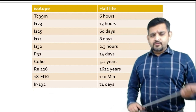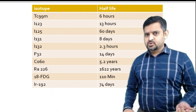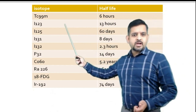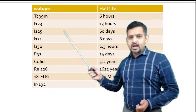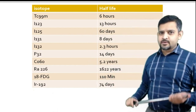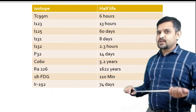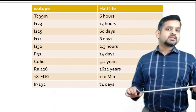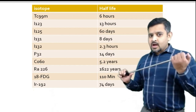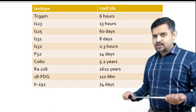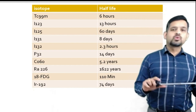In this video we will be learning important half-lives of radioisotopes. Technetium-99m has a half-life of 6 hours, Iodine-123 has a half-life of 13 hours, Iodine-125 has a half-life of 60 days, Iodine-131 has a half-life of 8 days, and Iodine-132 has a half-life of 2.3 hours.